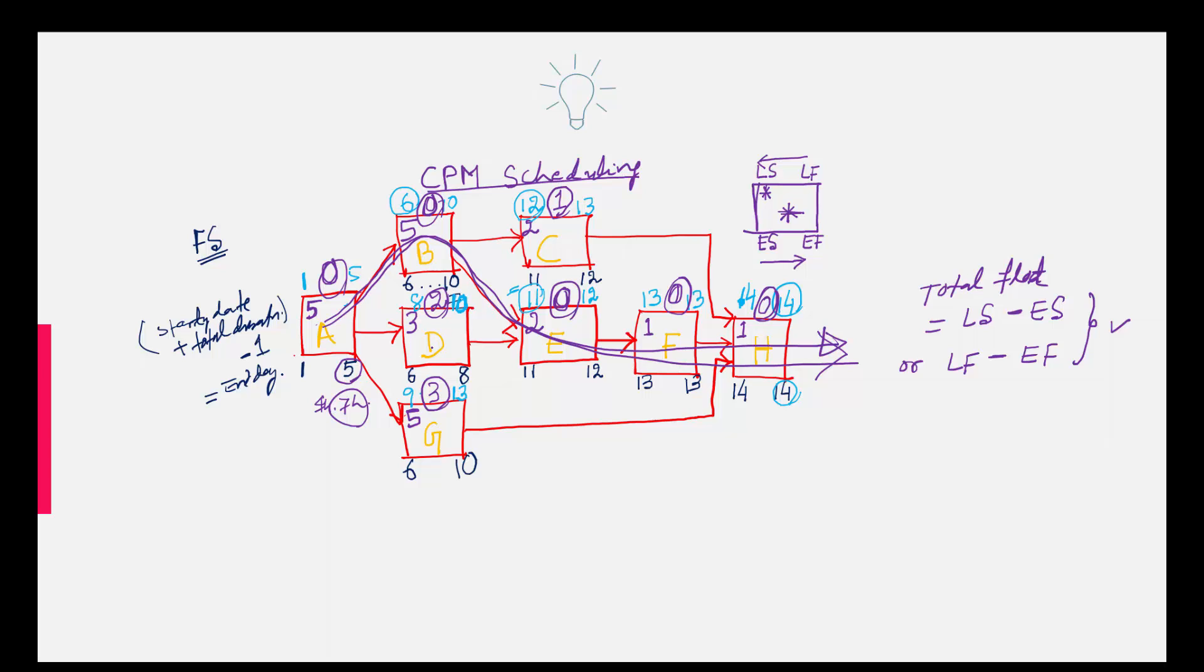But what about the other part where you have some total float? This total float is nothing but the buffer. It could even finish on day 12, early finish, or it could also finish over the late dates. You can start over 12 and finish it. So even when you finish over 13, this activity is in fact started over 14. So it's not going to have any ripple effect.